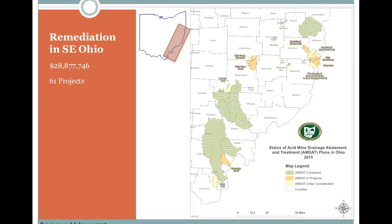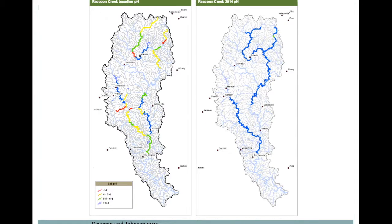Southeastern Ohio has undergone extensive remediation projects, with over 28 million dollars being spent on 61 projects. Shown here is an outline of Raccoon Creek, which is one of the most studied AMD remediation projects in Ohio. The left-hand side represents the baseline data before the implementation of remediation technologies. The blue color indicates stream sections meeting or exceeding the pH criteria in 2001 and then in 2014 post-remediation. As you can see, there have been drastic increases in the amount of stream sections meeting the pH criteria of 6.5 due to the remediation efforts.